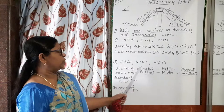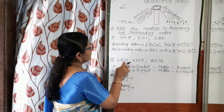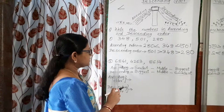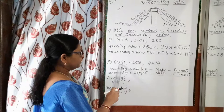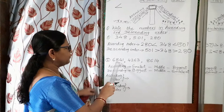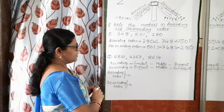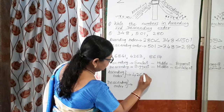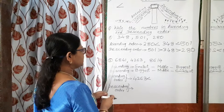These are three-digit numbers. Now let me show you four-digit numbers — how to write ascending and descending order. The numbers given here are 6841, 4263, and 8640. In ascending order, first find the smallest number. For four-digit numbers, we have to look at the thousands place. Here 8 is given, here 4 is given, and here 6 is given. Among 8, 4, and 6, the smallest is 4, so we take 4263 as the smallest number. We write 4263 first, then put the sign.